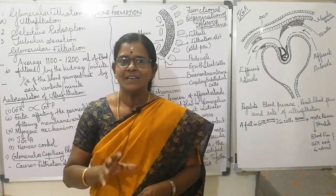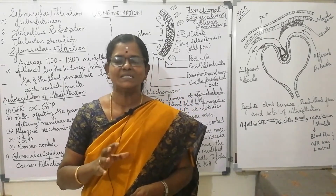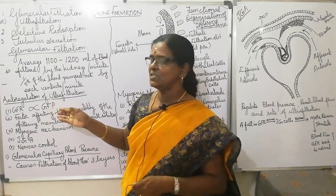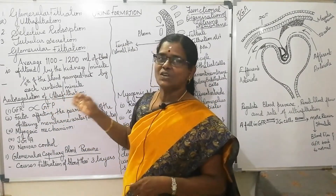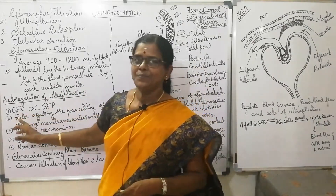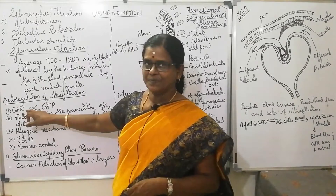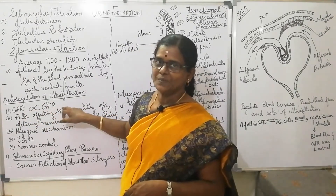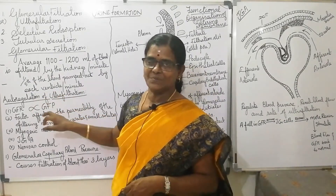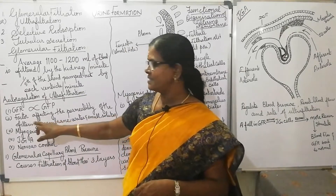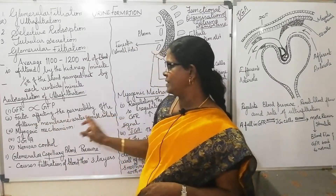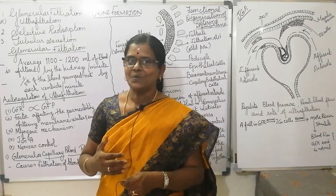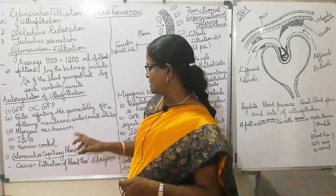This filtration is regulated. How is this filtration regulated? Auto-regulation of ultrafiltration. Glomerular filtration rate is directly proportional to glomerular filtration pressure. Now, the factors affecting the permeability of the filtering membrane: water and small solutes, myogenic mechanism, juxtaglomerular apparatus, and nervous control.